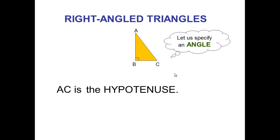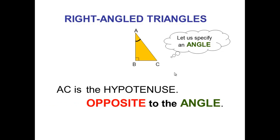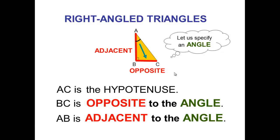For any right angle triangle, the first thing we need to do is specify the hypotenuse, then specify the angle. After we specify the angle, we find the opposite and adjacent. In this case, BC will be the opposite to the angle specified, so BC is opposite, and AB is the adjacent side, so AB is adjacent to the angle.